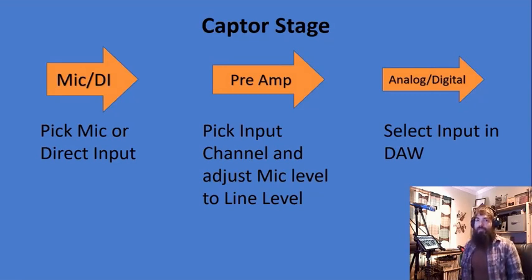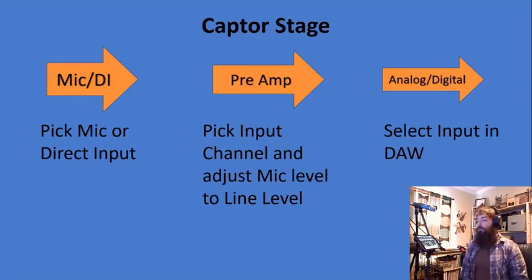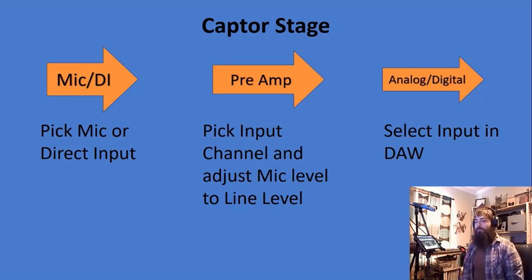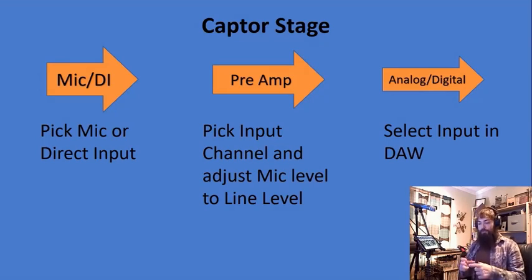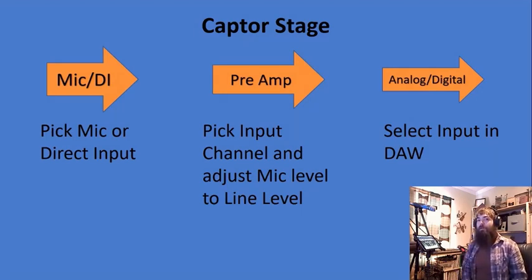First thing: capture stage. That's where we're going to be using either a mic or a direct input. If it's an acoustic instrument — obviously, like my voice — we're going to need a mic. If it's something like a keyboard or a drum machine, we might just be able to plug that straight in because it's got its own line level output, right into the direct input. Sometimes your mixer might not have a direct input on it, so you might actually need a direct input box. We'll talk about that — I think we already did when we talked about our mics.